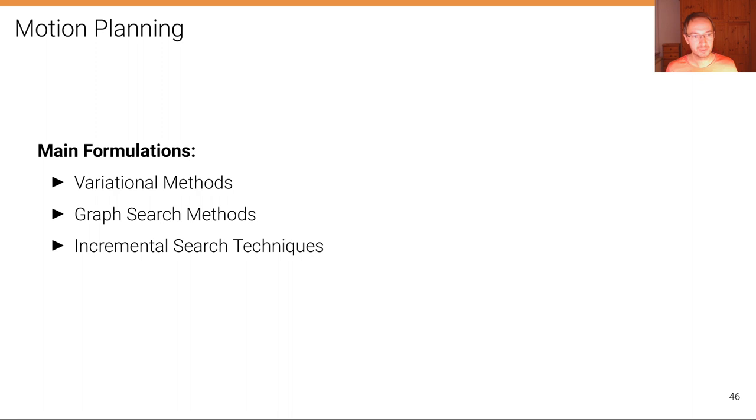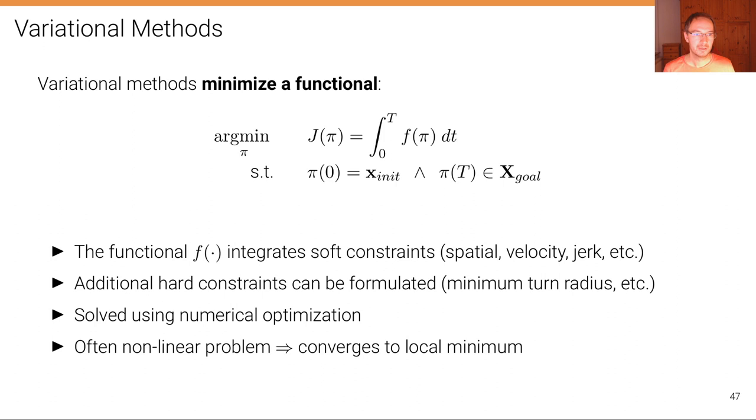There are three dominating formulations for solving the motion planning problem. The first type of methods use variational inference techniques, then there's graph search methods and incremental search techniques. Variational methods minimize a functional. Here we are trying to minimize that functional j that itself depends on the functional f of pi, where the minimum is sought over all possible trajectories pi. That's why it's called a functional, minimizing a function of a function. So we're minimizing that integral from 0 to time horizon T.